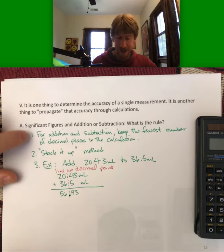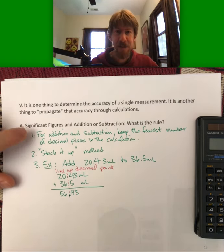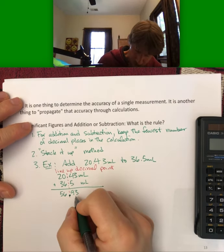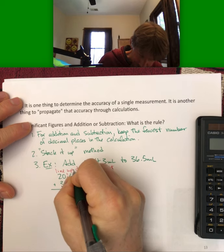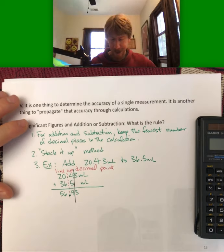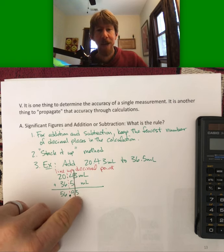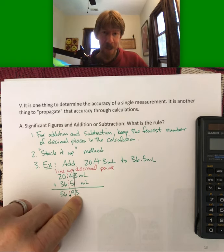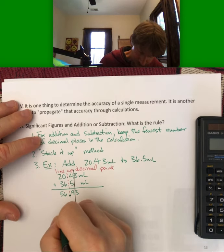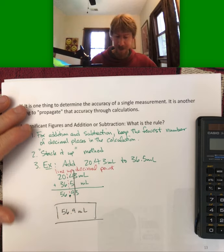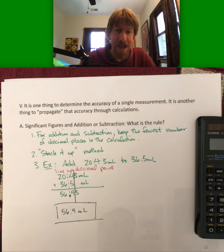And then for sig figs, keep the fewest number of decimal places. That's one, so I draw a line here. And I know that my answer is going to be 56.9. I would have to round if this was bigger than a five or bigger, but I don't this time.